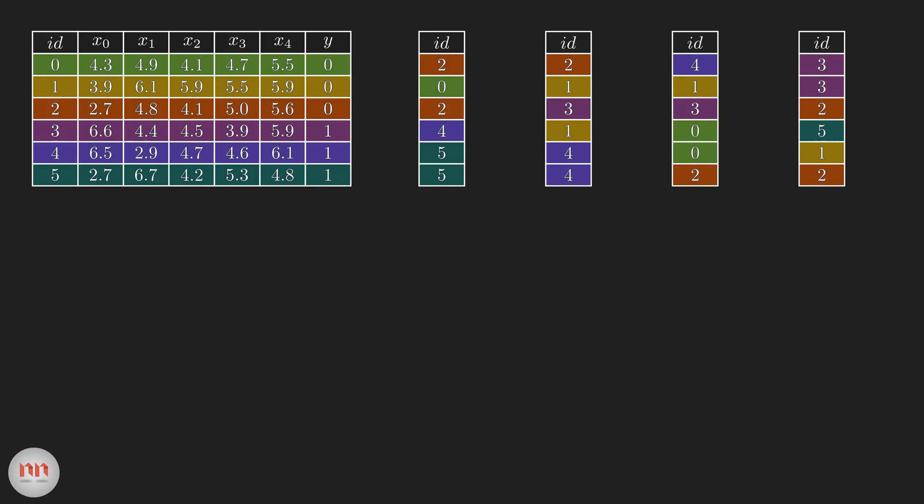For example, in the first case, we will only use the features x0 and x1. Similarly, here are the subsets used for the remaining trees. Now, that we have got the data and the feature subsets, let's build the trees.